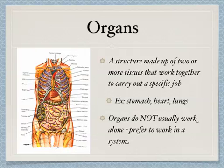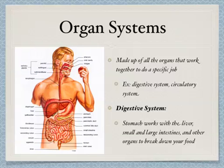Take a look at the picture on the left. Organs do not usually work alone — they like to work in a system. An organ system is made up of all the organs that work together to do a specific job. Some examples include the digestive system and the circulatory system. Let's take a closer look at the digestive system. In the digestive system, the stomach works with the liver and the small and large intestines and other organs to break down your food.